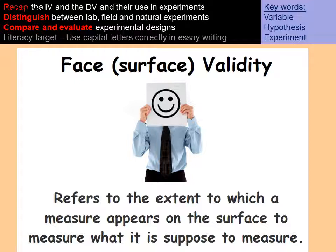Face validity, often called surface validity, refers to the extent to which a measure appears on the surface to measure what it's supposed to measure. For example, an IQ test on the surface seems like a good measure for intelligence.